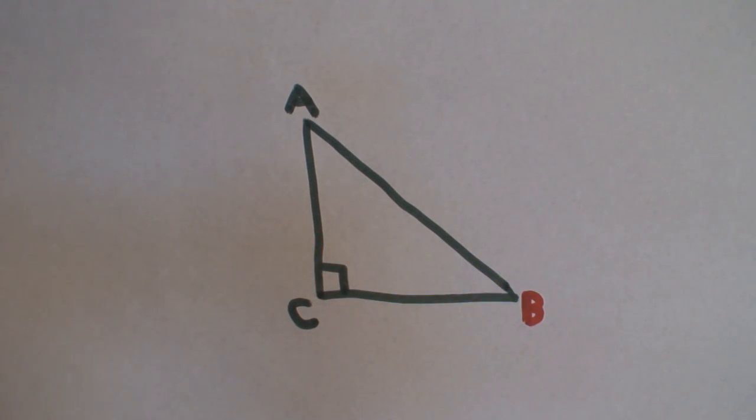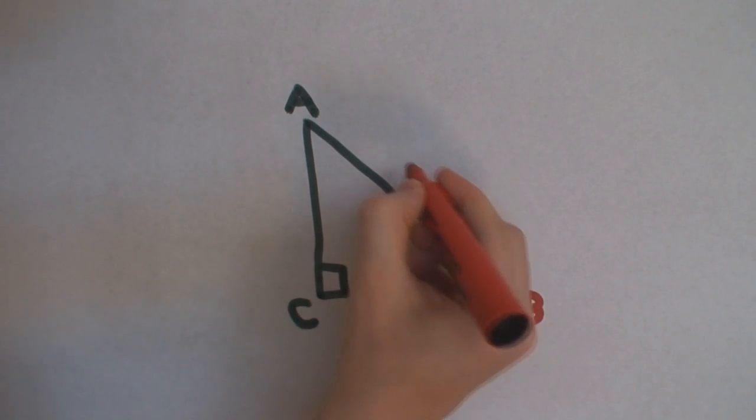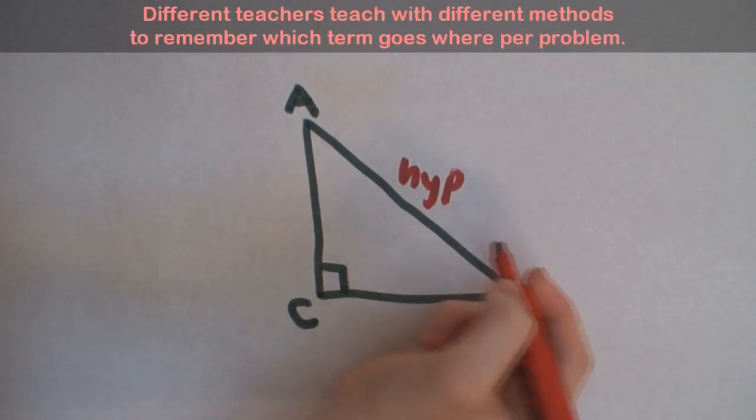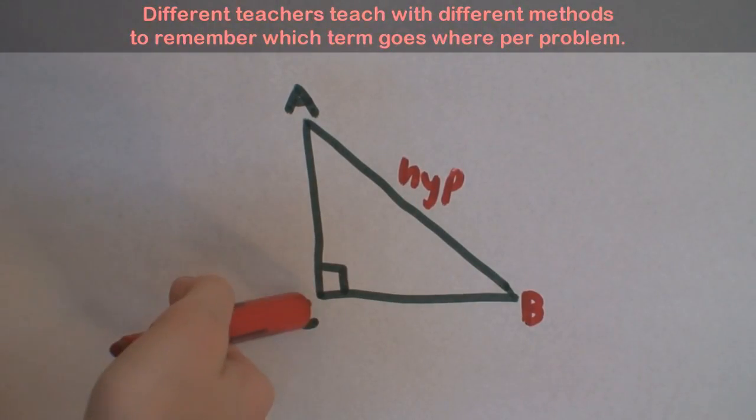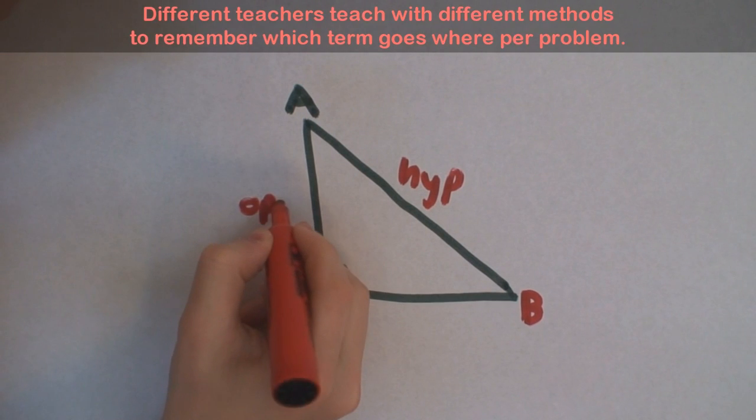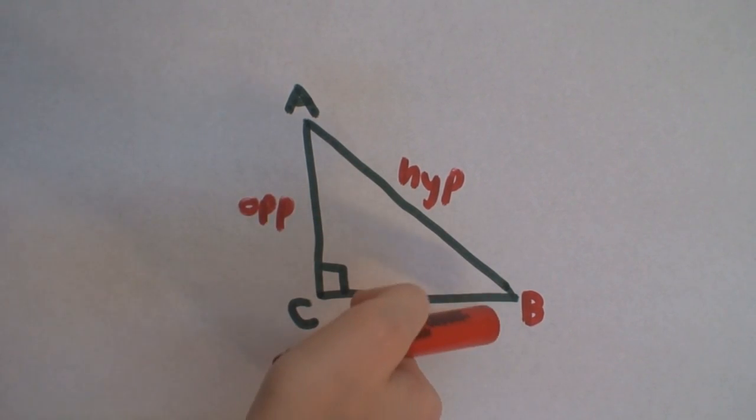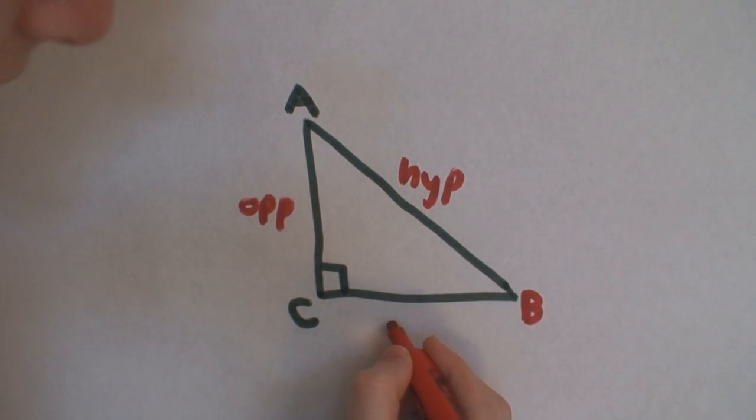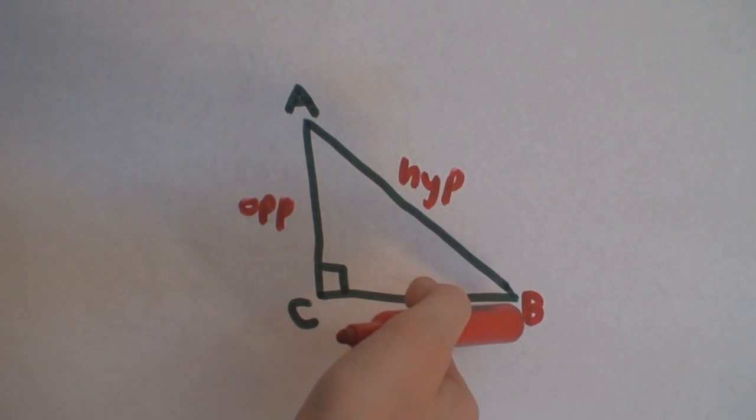So, to sum it up, line AB would be the hypotenuse because it is the side opposite of the right angle. Line AC would be the opposite side because it is the side opposite of the angle you are using and both endpoints don't touch the angle you are using. And line CB is the adjacent side because it connects the angle you are using with the right angle.